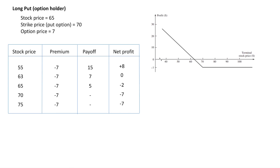Now let's look at the graph. On the y-axis we have the net profit and on the x-axis we have the stock price. You can see the strike price of 70. Whenever the stock price is greater than or equal to 70, the option is not exercised, and the net profit is just the loss of the premium — minus 7. Whenever the spot price is less than 70, we will exercise the option because we get to sell at a higher price than the market price. The strike price is greater than the spot price, which is why we exercise the option in all cases where the spot price is less than 70.